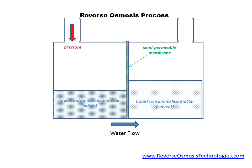Reverse osmosis was perfected by the U.S. Navy to remove salt from seawater and produce drinking water for submarines. In practice, reverse osmosis is used to purify water by removing contaminants such as salt from the water at the molecular level.